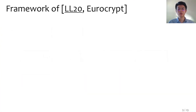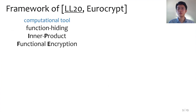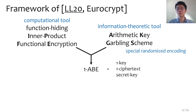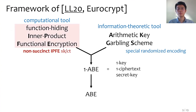How do we construct our ABE scheme? Our starting point is the framework of our previous work appearing in Eurocrypt. It uses a computational tool — function-hiding inner product functional encryption, or IPFE for short — and an information-theoretic tool called arithmetic key garbling scheme, or AKGS, which is a special randomized encoding. By combining the two ingredients, we obtain a one-key, one-ciphertext, secret-key ABE (1ABE for short), which can be upgraded to full-fledged ABE. This framework is used to obtain compact and adaptive ABE where the ciphertext size grows with the attribute length. However, it cannot be used as-is to obtain succinct ABE, because the function-hiding property of IPFE forces its keys and ciphertext to be non-succinct.